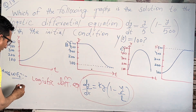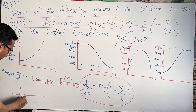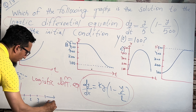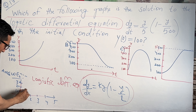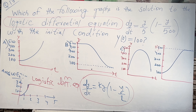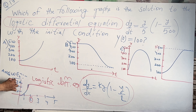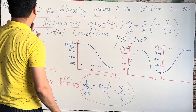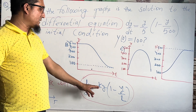For example, on this graph with axes going to ten, twenty, thirty, the function first increases and after a point becomes constant at value three. That value of three is called L — the maximum value. So L is the maximum value, and this is the equation of the logistic differential equation. dy/dx is involved, and k is a constant.